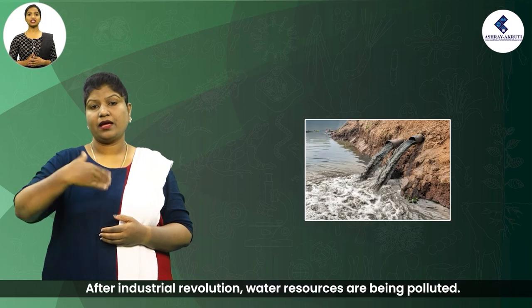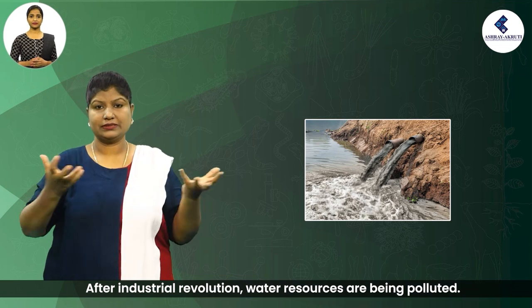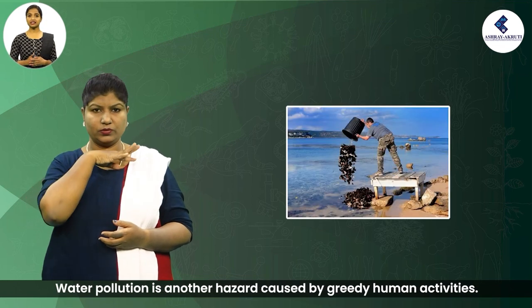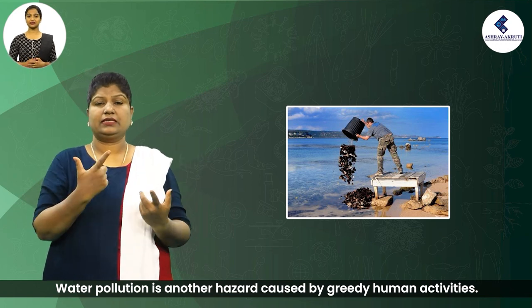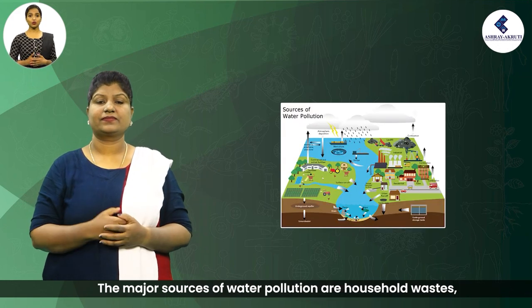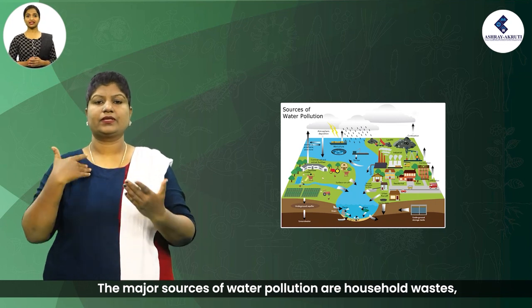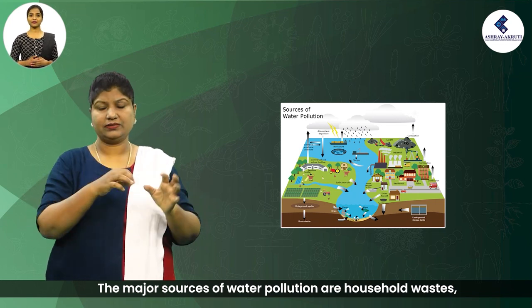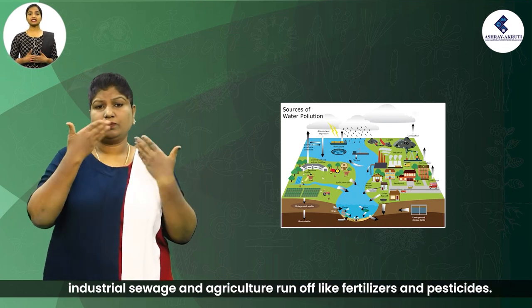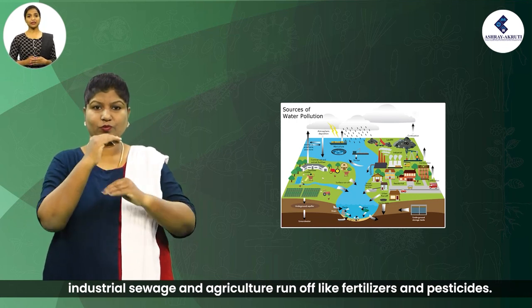After the industrial revolution, water resources are being polluted. Water pollution is another hazard caused by greedy human activities. The major sources of water pollution are household wastes, industrial sewage, and agriculture runoff like fertilizers and pesticides.